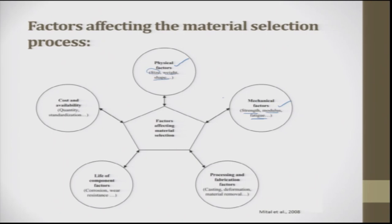Processing and fabrication factors are also important — for example, whether the process is casting, deformation, or subtractive. Casting involves taking material to a higher temperature, melting it, and pouring it into a die. Deformation means applying load to deform the material. Subtractive is material removal, where unwanted material is removed to get the desired feature. The processing and fabrication factor is important in deciding the material for a given product.